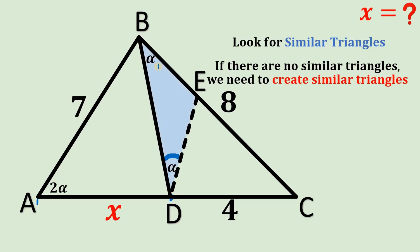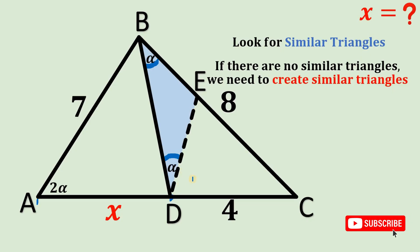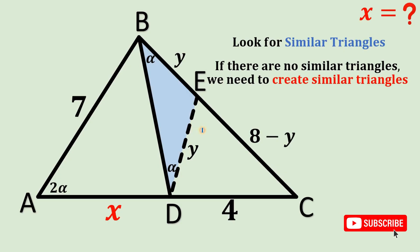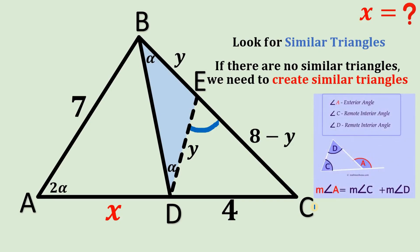Let's focus on this triangle first. We have two base angles equal to alpha, therefore triangle BED is simply an isosceles triangle. Let's call DE equal to y, therefore BE is also y. In this case, EC is simply equal to eight minus y. Now let's focus on angle DEC. We'll use the exterior angle theorem: the exterior angle equals the sum of the two remote interior angles. So this angle equals alpha plus alpha, or simply two alpha.